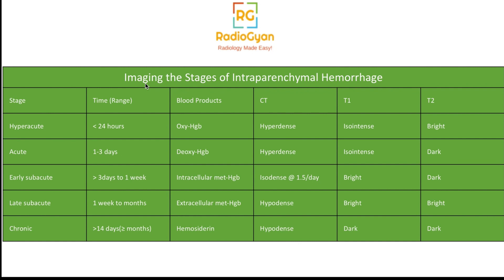Moving on to the acute stage: deoxyhemoglobin causes T2 shortening. T1 is not affected and remains iso-intense, but on T2 the clot becomes hypointense because of the deoxyhemoglobin.